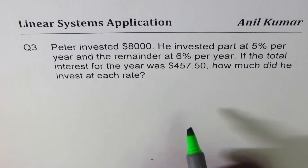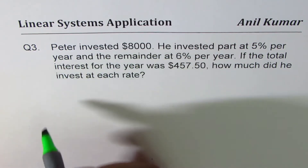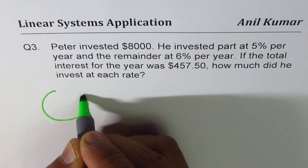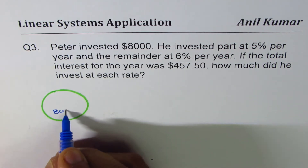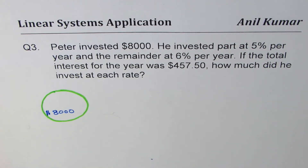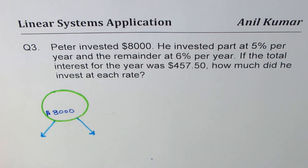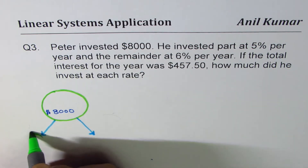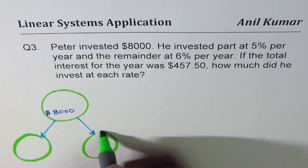To solve such a question, I believe in a very simple line sketch. We can start with the total investment, which is $8,000. This total is being invested at two different rates.